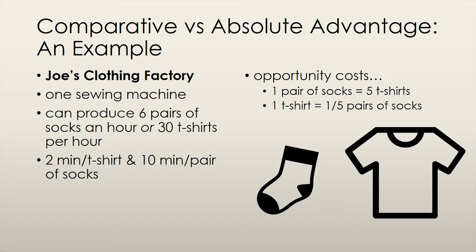If we want to know the opportunity cost of producing a pair of socks, we need to think of the best alternative Joe has with the 10 minutes it takes him to make those socks. In 10 minutes, Joe can also produce 5 t-shirts, so the opportunity cost of producing a pair of socks is 5 t-shirts. Similarly, in the 2 minutes it takes Joe to produce a t-shirt, he could have produced one-fifth of a pair of socks. Thus, the opportunity cost of making a t-shirt is one-fifth of a pair of socks.